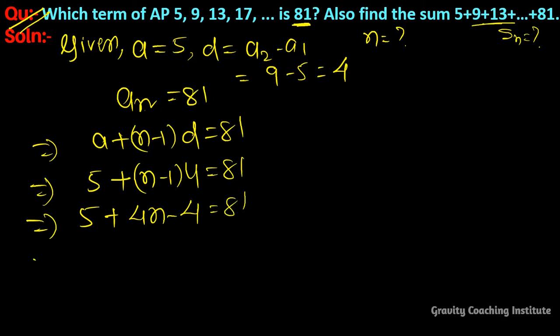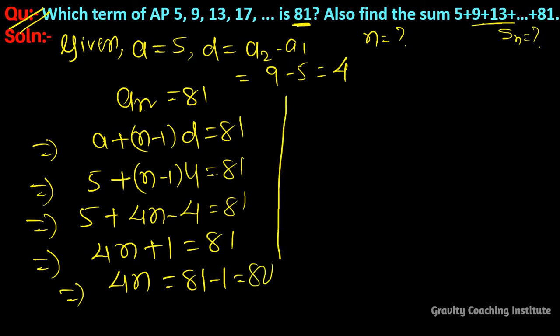This implies 4n + 1 = 81, so 4n = 81 - 1 = 80. Therefore n = 80/4 = 20.